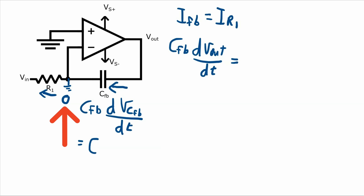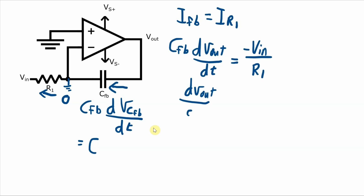That current equals I_R1, which we can figure out based on Ohm's law. We've got zero volts on this side of R1 and V_in on the other side, so that'll be zero minus V_in, or just negative V_in over R1. Bringing the feedback capacitor to the right-hand side, we get dV_out/dt equals negative V_in over R1 times C_FB.